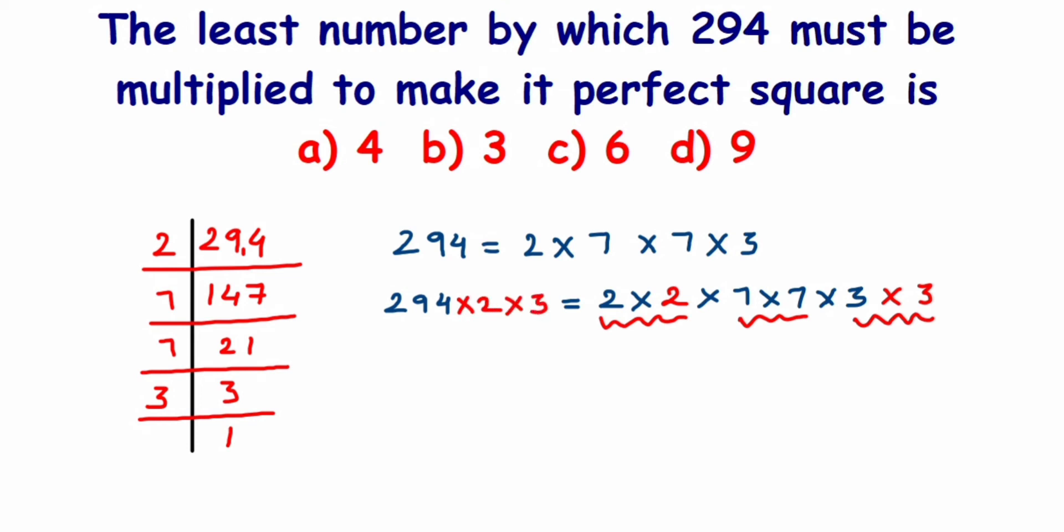I have multiplied 2 and 3. 2 into 3 I multiplied, so 2 times 3 is nothing but 6. I'm multiplying here with 6 - that will be my smallest number or the least number. So 294 multiplied by 6.